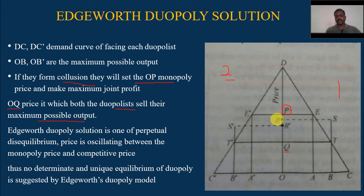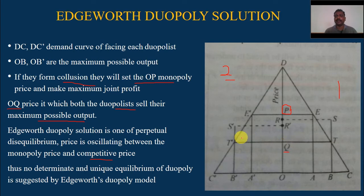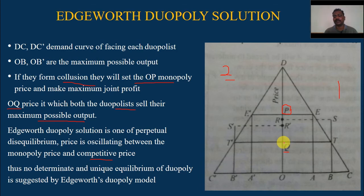This price cut will continue until the competitive price OQ level is set. Beyond this point, reducing the price further means going below average cost, which would result in a loss. So OQ is the competitive level of price they are going to set.